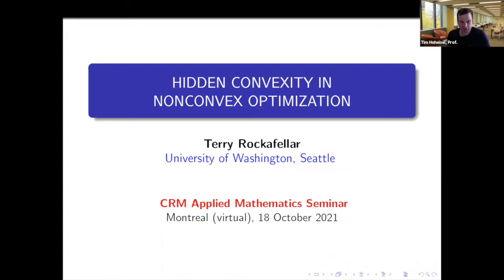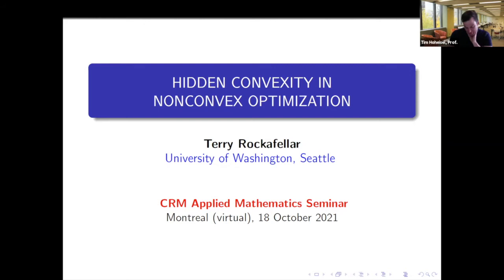Welcome everybody. It's a great turnout, great to see everyone. We have a very special speaker today, Terry Rockefeller. Professor Rockefeller got his PhD from Harvard in 1963 with a thesis entitled 'Convex Functions and Dual Extremum Problems.' From 1966 on, he was a professor at University of Washington in the math department. His fundamental work in optimization and non-smooth and set-value analysis has had tremendous impact, recognized by numerous awards including the Dantzig Prize by SIAM and the John von Neumann Theory Prize by INFORMS.